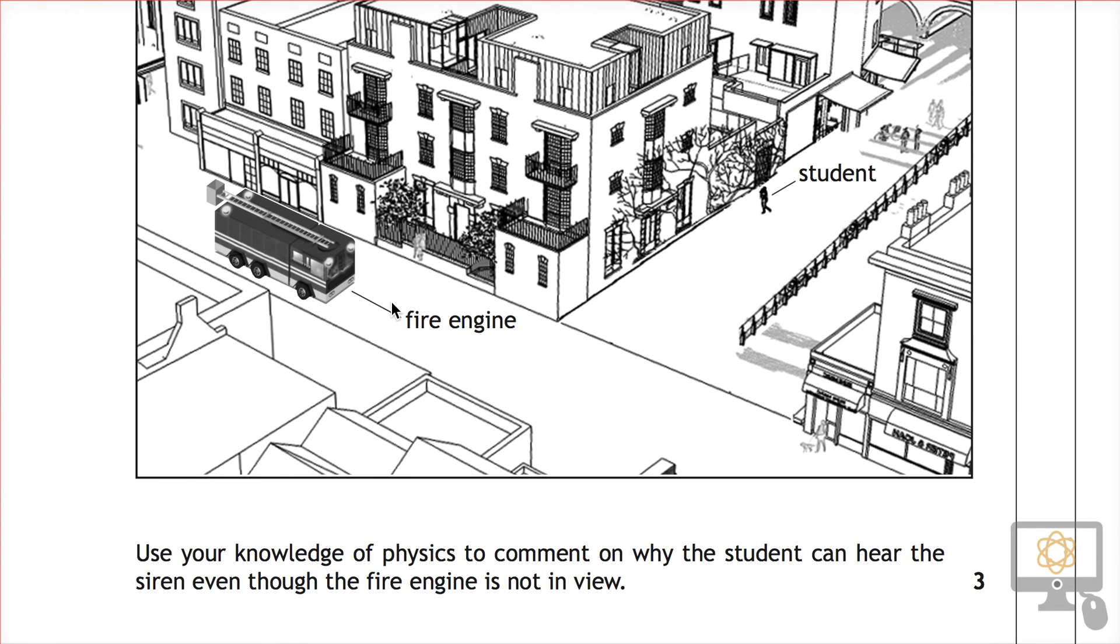This is about being able to hear sounds but not see objects around corners. We need to talk about light and sound. First about light: the key thing I think you must get across is that light travels in straight lines.